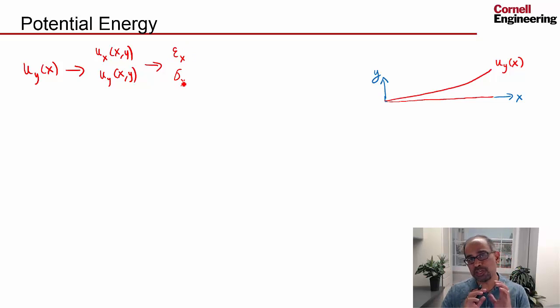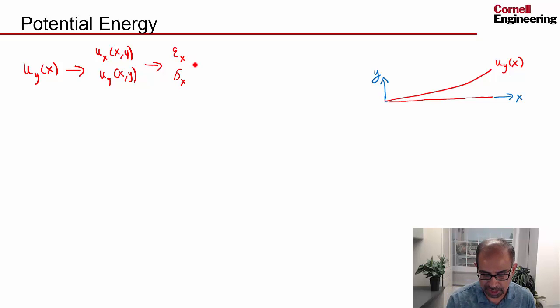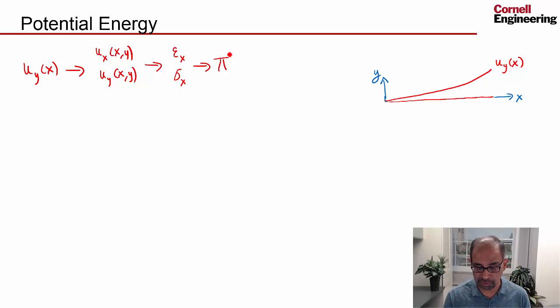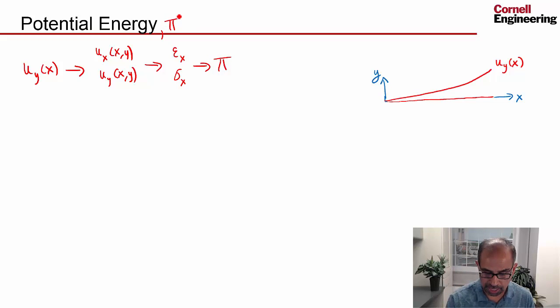Once we know the stress and the strain, it turns out we can determine what the total potential energy of the beam is. That's usually denoted with capital Pi.